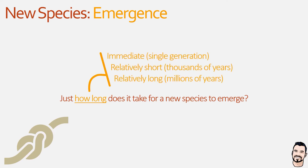Evolutionary timescales are unlike normal timescales. They can be immediate in terms of our punctuated model, or occur over many thousands or even millions of years relating to our gradual model. And as we've seen, when we have a gradual change it can be quite difficult to delimit species and identify a cutoff point.